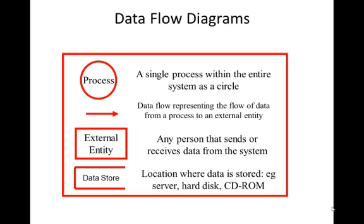Data flow diagrams use four symbols. The first is a circle, which represents a process — something that happens. A data flow is represented by an arrow indicating the direction of flow, with labels showing the data flowing in that direction. An external entity is any person that sends or receives data from the system, otherwise known as participants within the system.